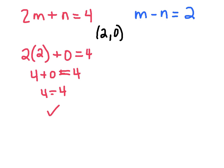When I substitute my values into my other equation, 2 minus 0 equals 2. 2 equals 2. So my solution 2, 0 checks out in both equations.